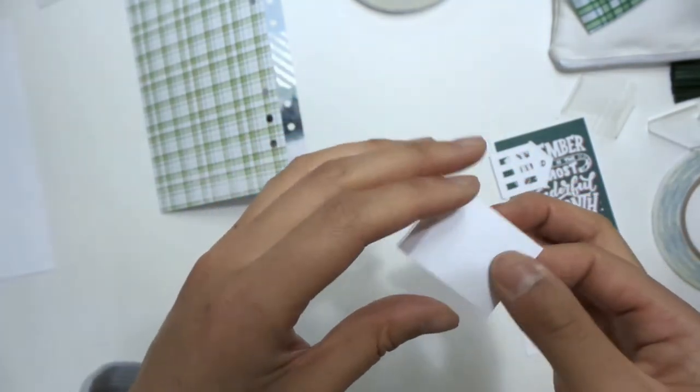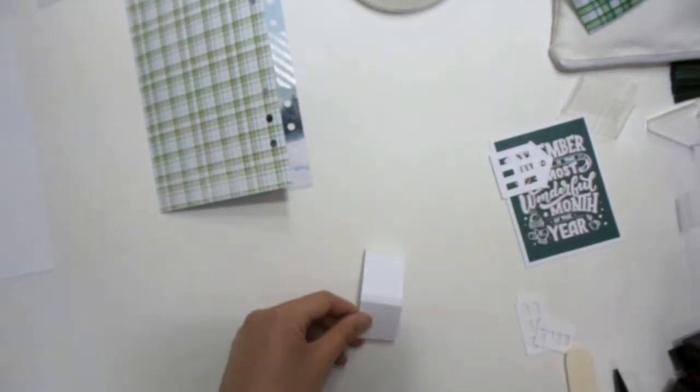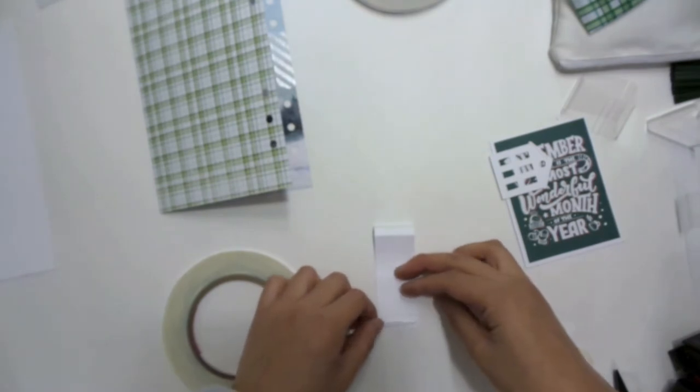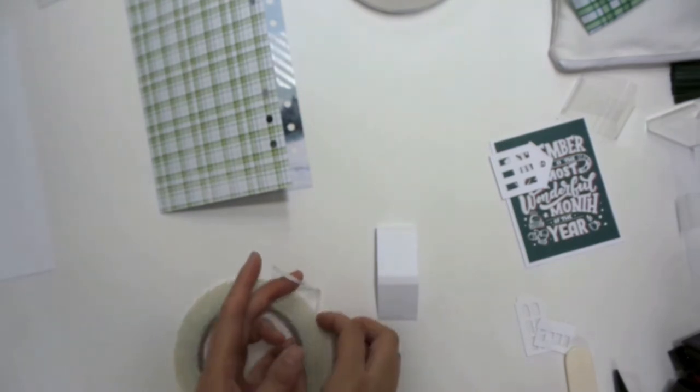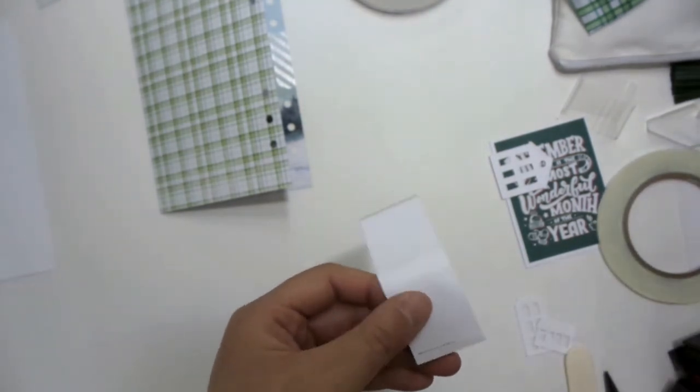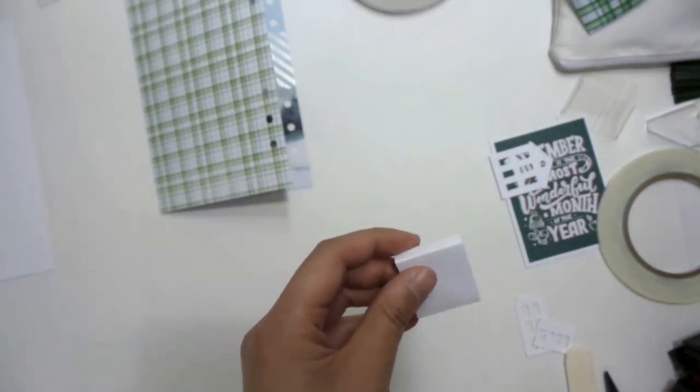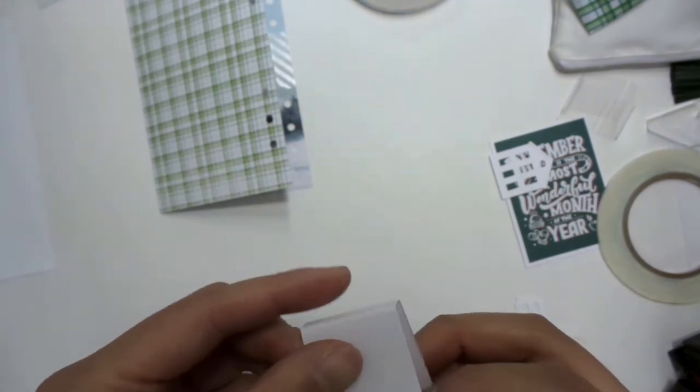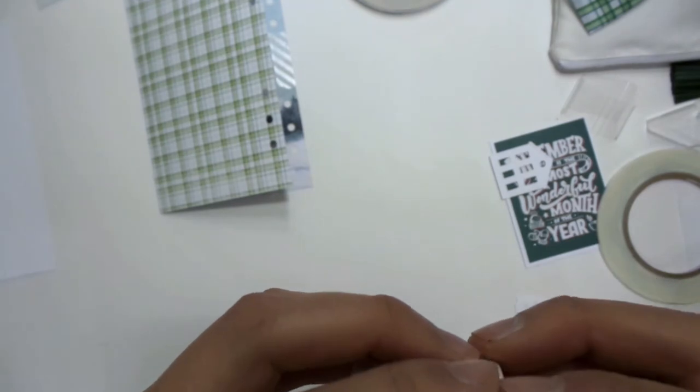So what you want to do next is apply score tape onto this edge. I'm using the eighth of an inch score tape here. So that when you peel off this tape backer, you can stick on this quarter inch flap like so.